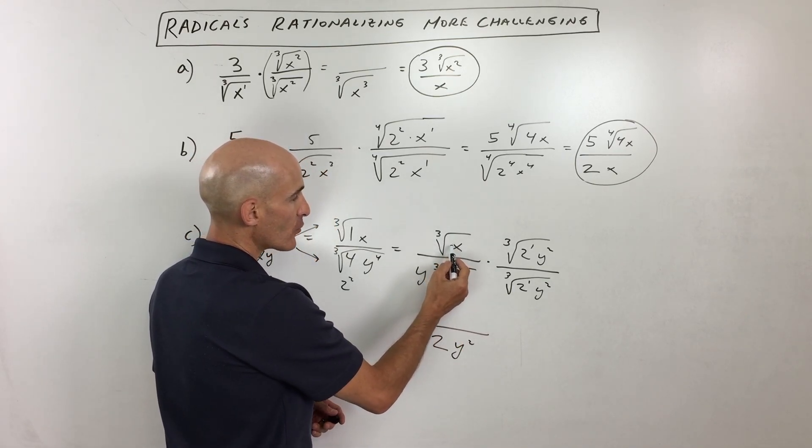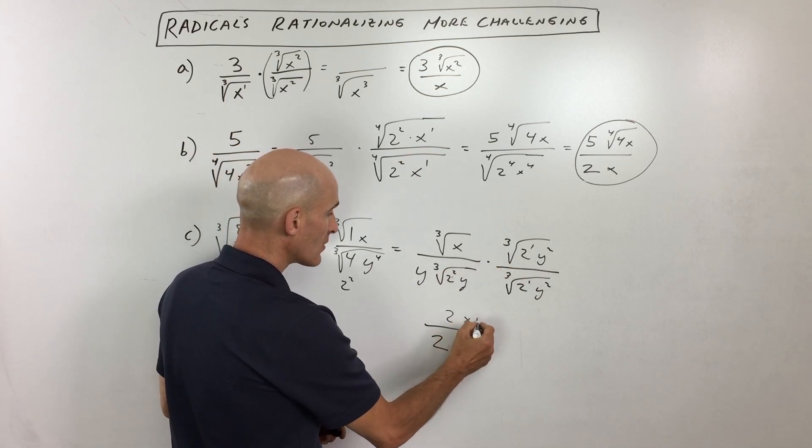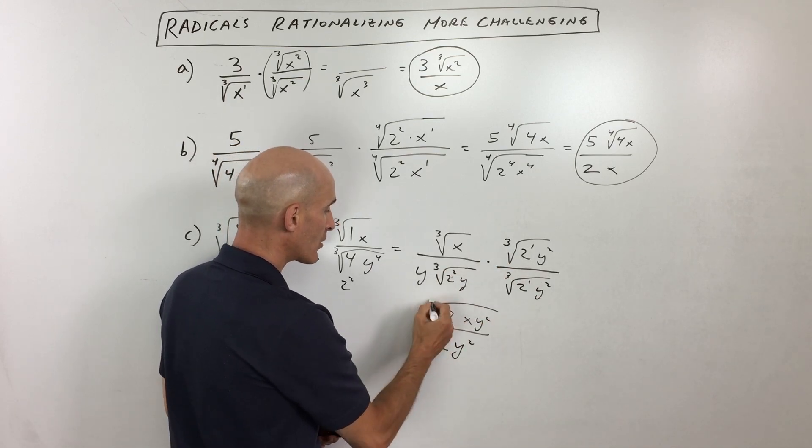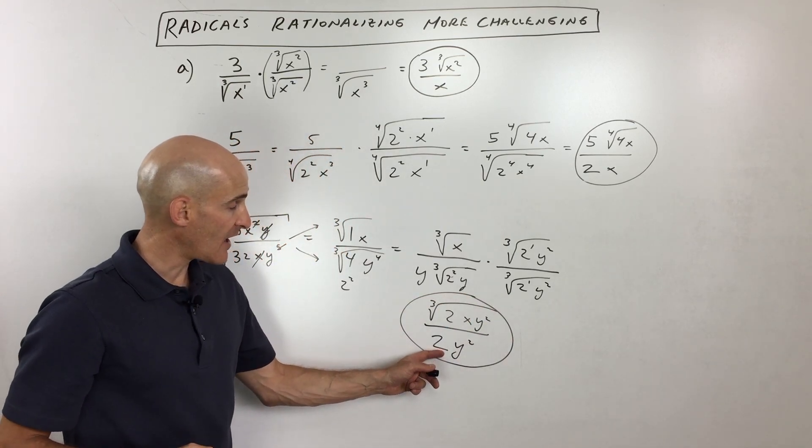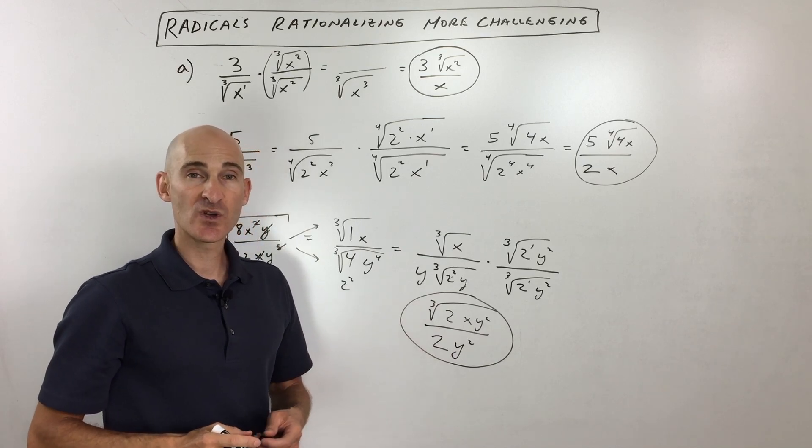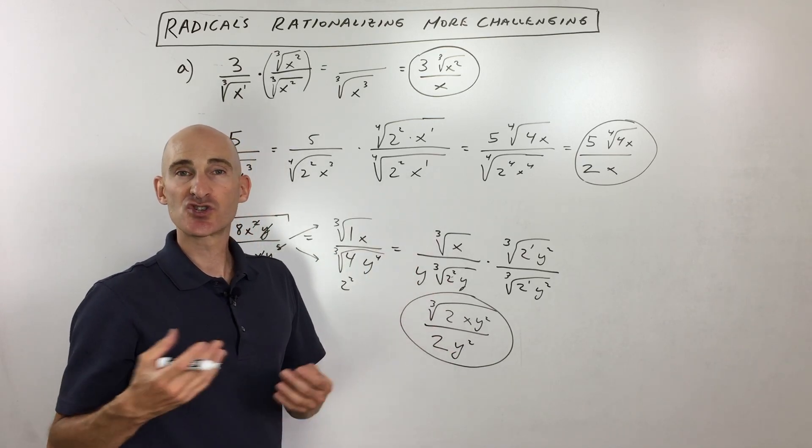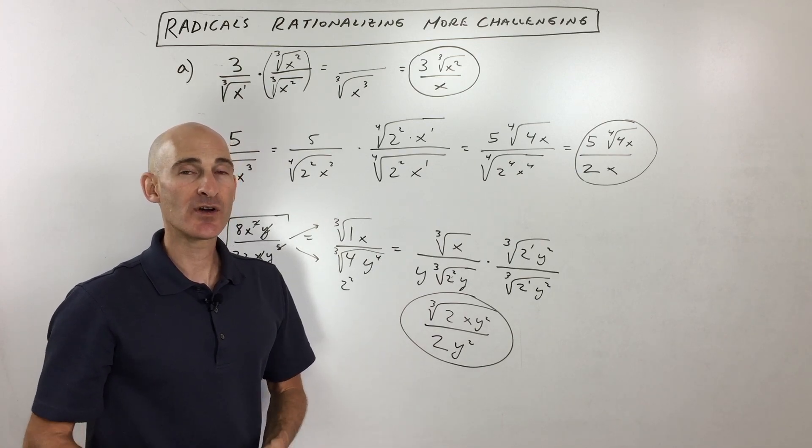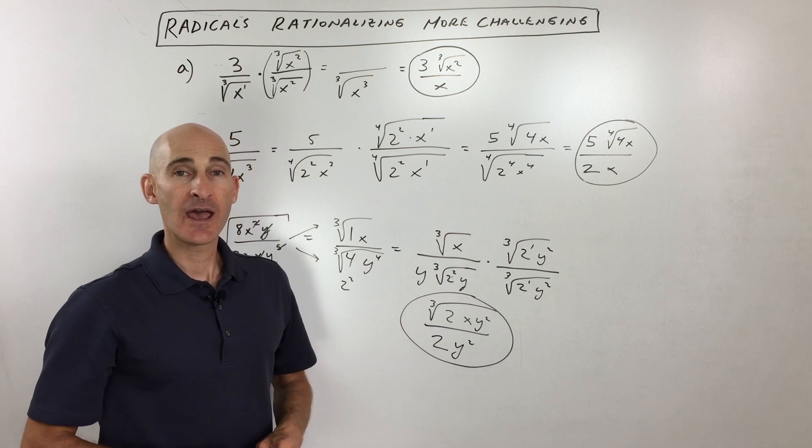And then over here in the numerator, we've got, let's see, cube root of 2xy squared, and that's all underneath the cube root. And that's as far as we can go. So we've got rid of the radical in the denominator, and we simplified as much as we possibly could. So that's our final answer. In all these examples, I was just assuming that the variables were positive, so just make a note of that. These were, I considered that they were all positive. And that's it.